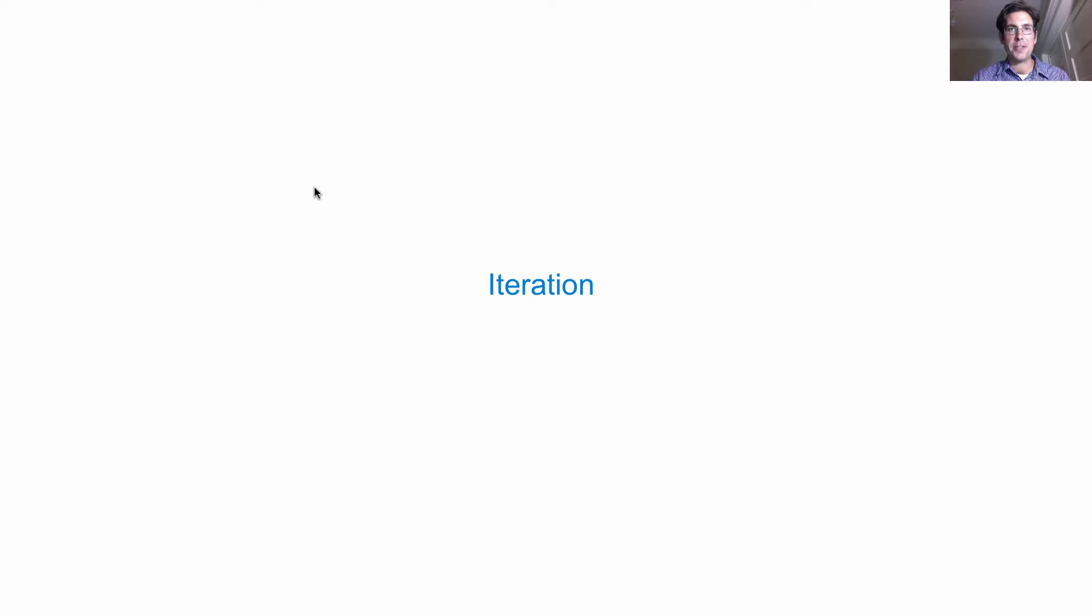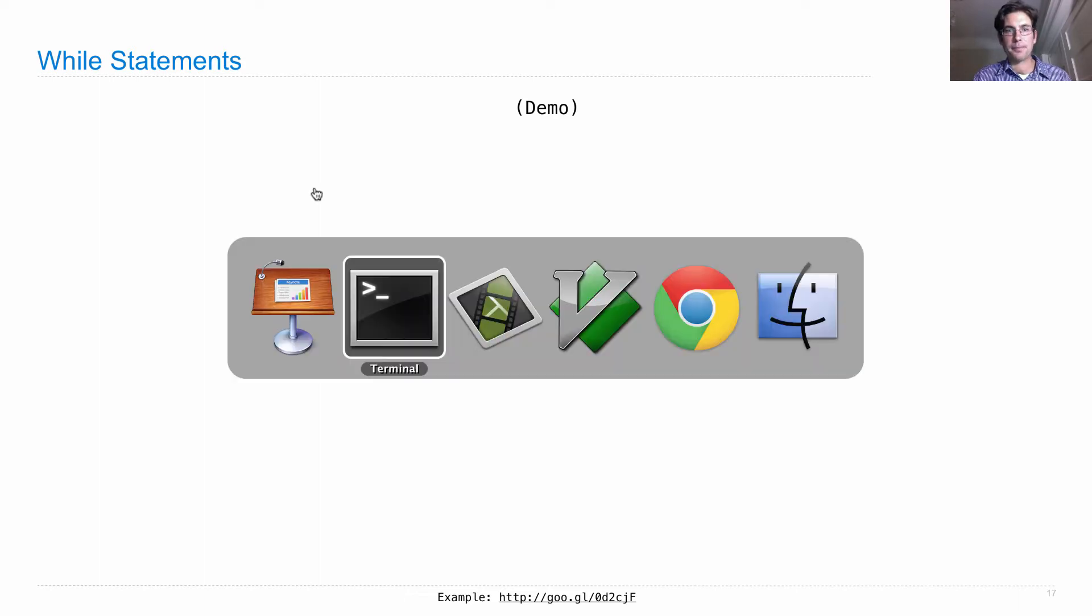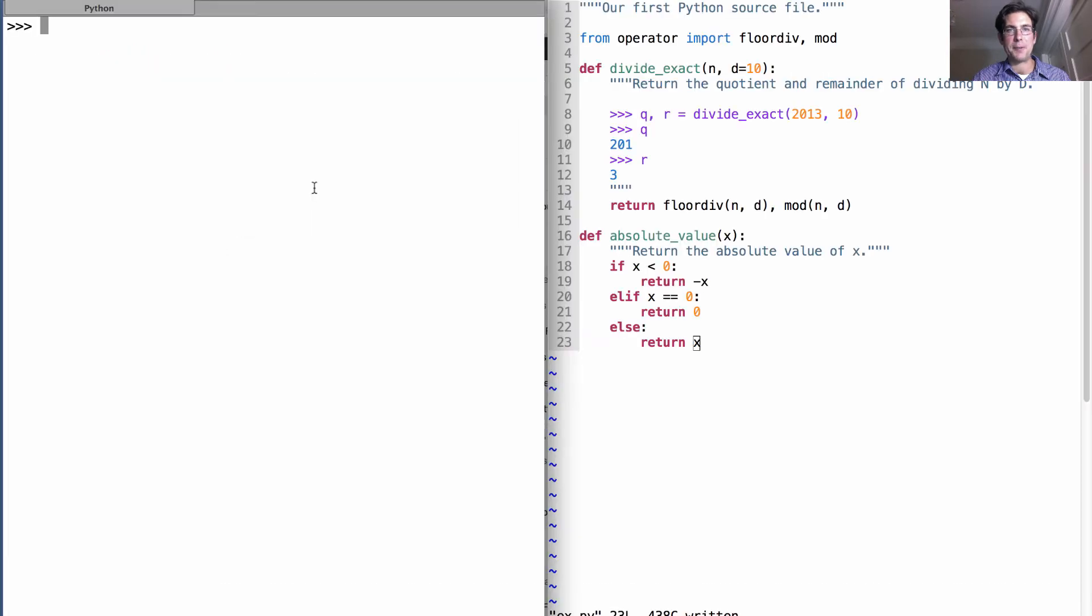Our last topic for the day is iteration, and we'll learn about the while statement, which is a way to perform iteration. Computers are most effective if you can get them to do the same sort of computation over and over again because they're really fast. A while statement is a way to do that.